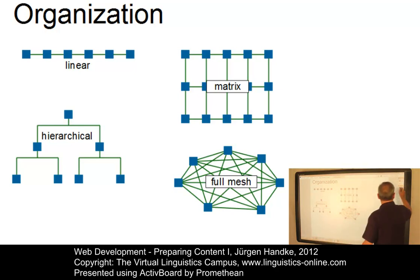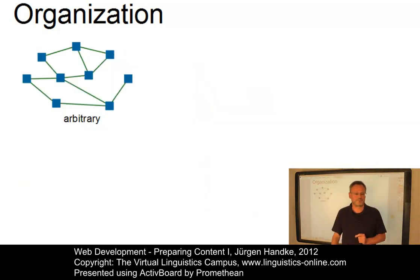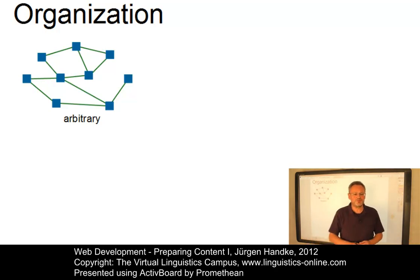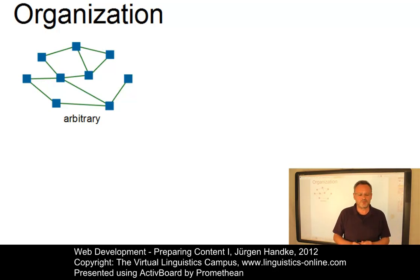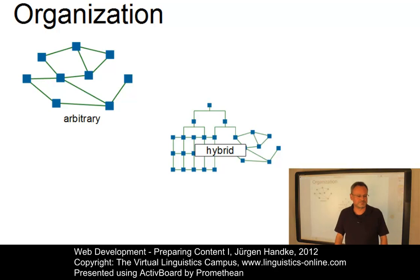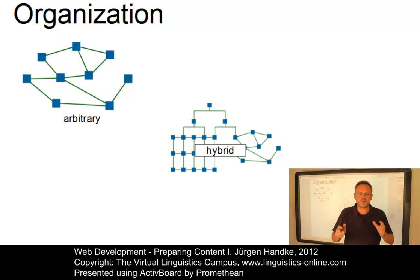Sometimes schemes can even be arbitrary, but such a scheme should be avoided since it is likely to irritate users and a clear-cut structure cannot be made out. This scheme is often used when there is no central authority determining the organization of content. The most common scheme, however, is the hybrid scheme. Most sites are to some degree a combination of these various schemes, especially when the organization of the content changes.